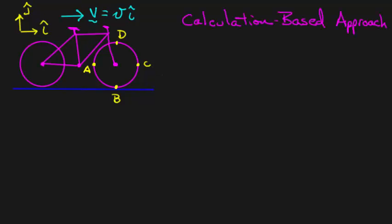In this video, we're going to solve this problem using what I call a calculation-based approach. That is, we're going to use our definitions of velocity and angular velocity on a rigid body involving vector cross products, and we're going to work out these vector cross products to answer the question.